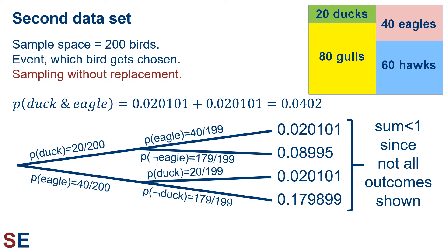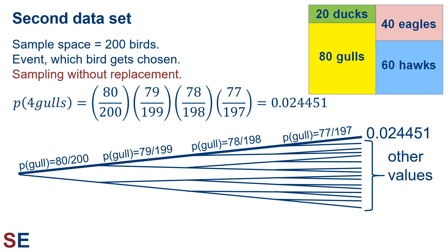One thing to note about our probability tree is that the probabilities shown here don't add up to 1 like they did for the first example, because in the first example all possible pairs of outcomes were shown, whereas here we only focused on a subset of the possibilities. For the probability of choosing four gulls without replacement, we start with 80 gulls out of 200 birds, then 79 out of 199, then 78 out of 198, and finally 77 out of 197. Multiplying those four probabilities gives us an overall probability of choosing four gulls of 0.024451.